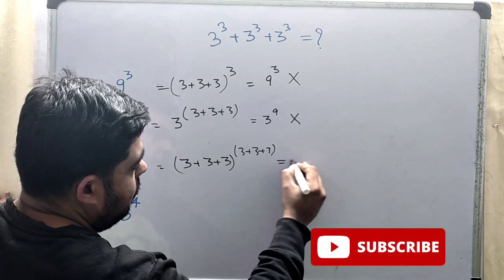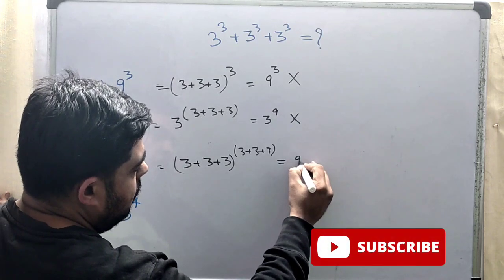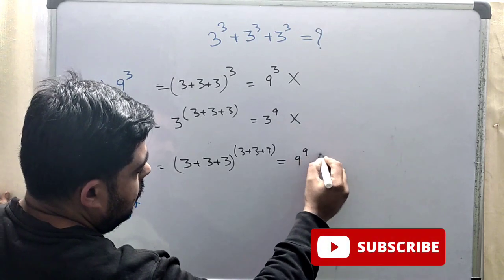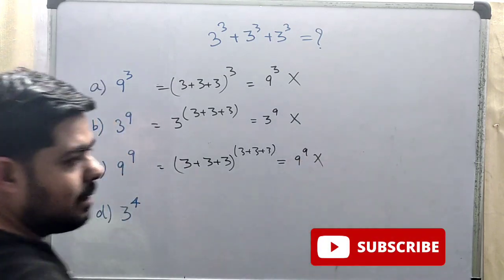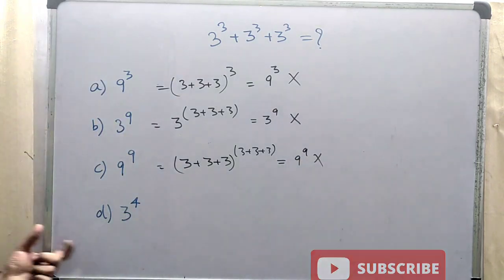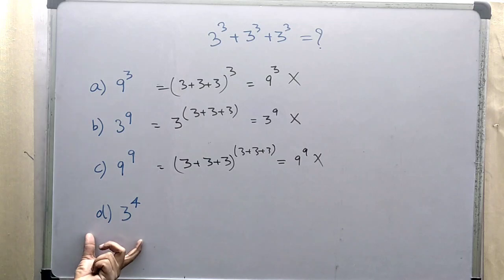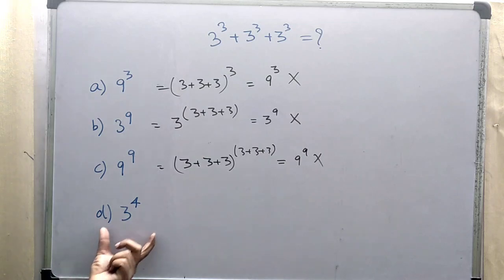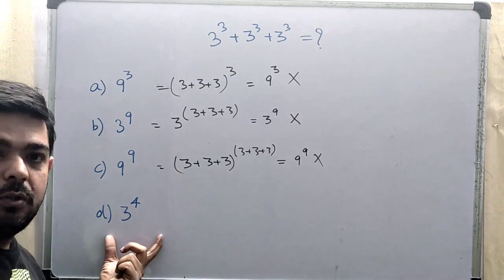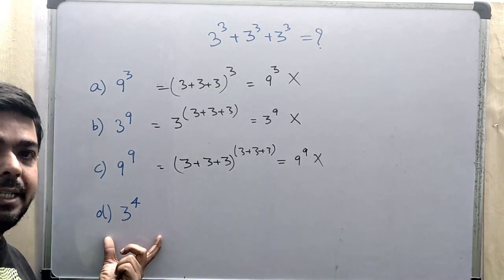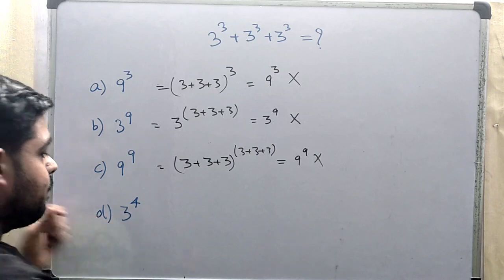So this is also not our answer. That means the remaining one, 3 to the power 4, is our answer. So let's verify.